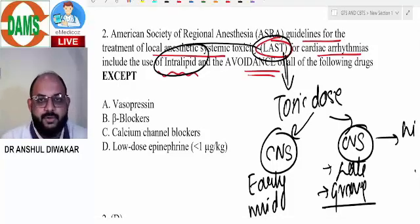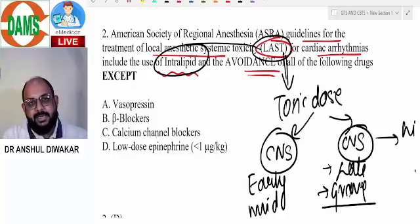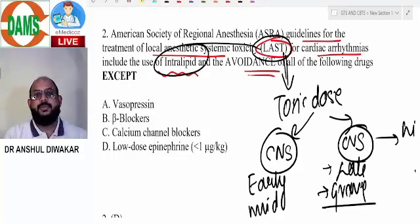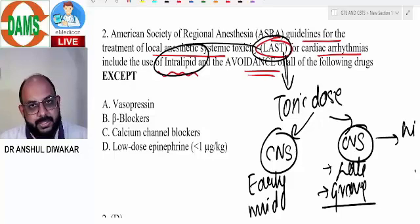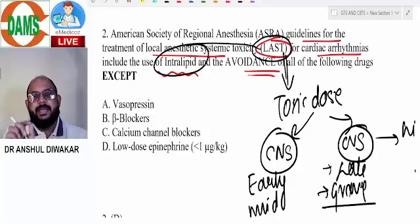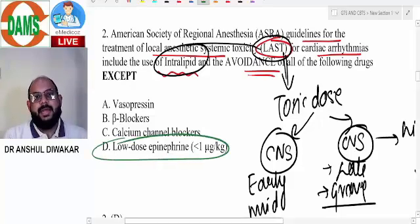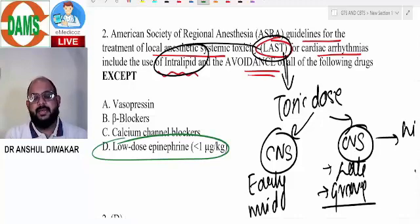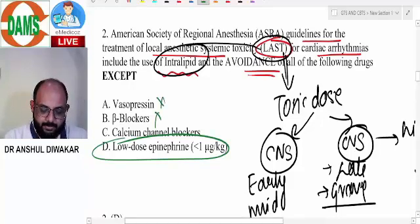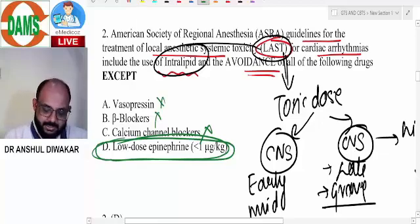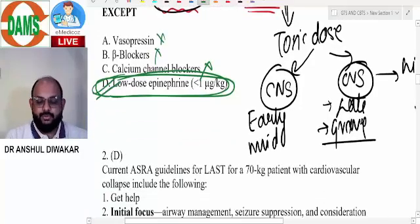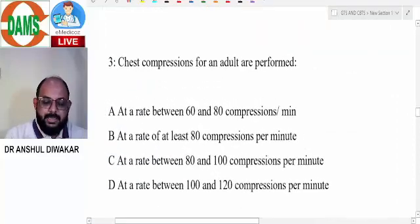The drug of choice for treatment of bupivacaine-induced cardiotoxicity is intralipid. Apart from intralipid, there is practically no other drug except low-dose epinephrine, which is beneficial because it is both inotropic and vasopressor. In case of cardiac arrest, use amiodarone. The correct answer is low-dose epinephrine.